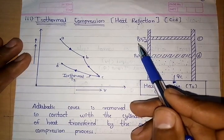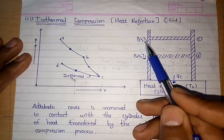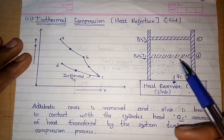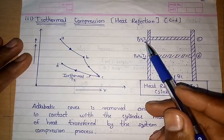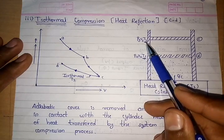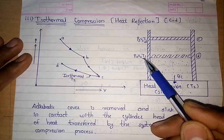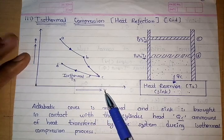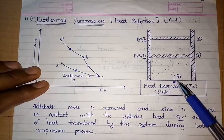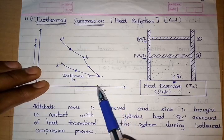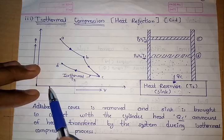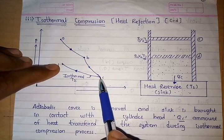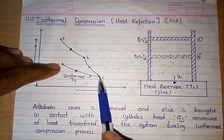At position C: pressure P3, volume V3, temperature T2. At position D: the corresponding pressure, volume, and temperature, with temperature remaining T2 because it is an isothermal process. On the PV diagram, as volume decreases during compression, pressure increases, so this process is represented by curve C to D.